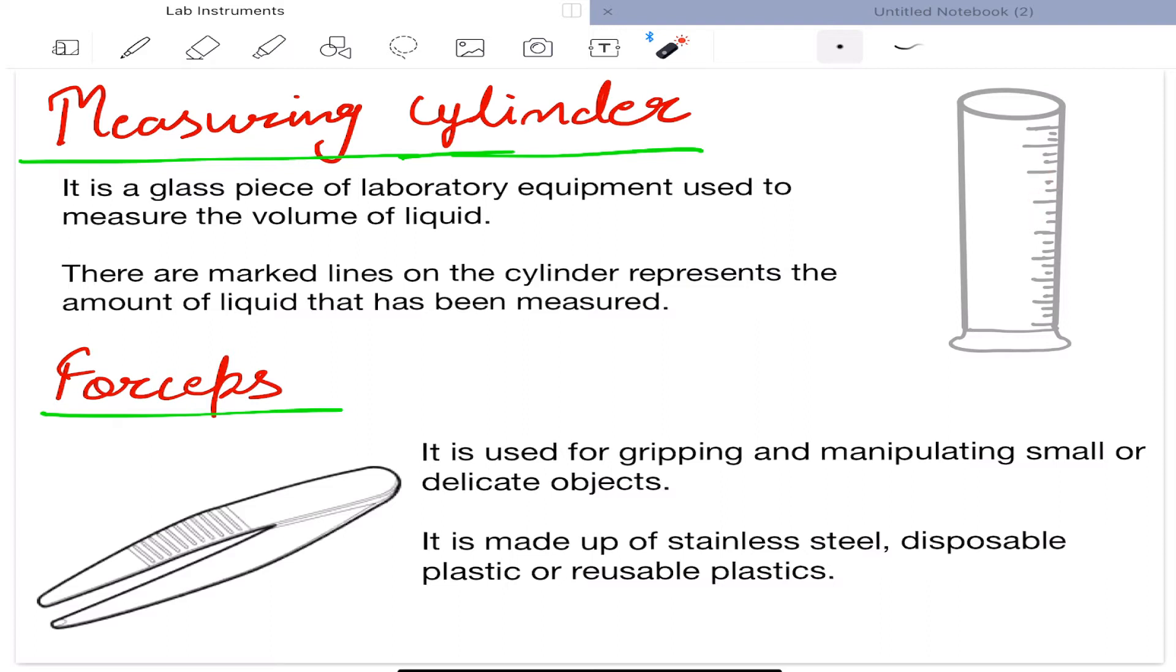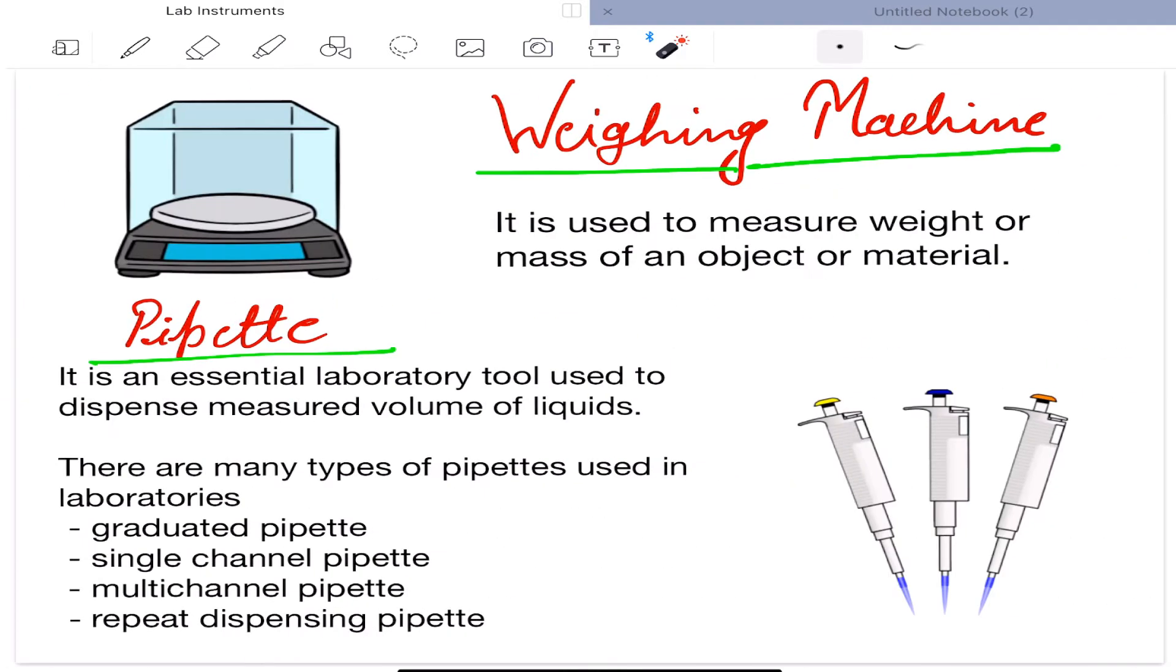Next is forceps. It is used for gripping and manipulating small or delicate objects. It is made up of stainless steel, disposable plastic, or reusable plastics. Next is weighing machine.